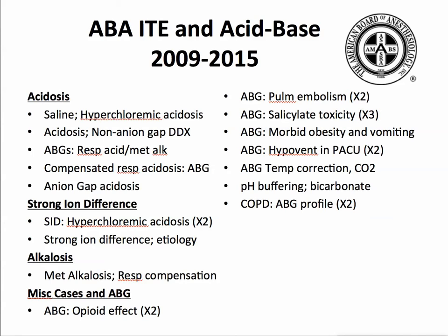There are several questions on strong ion difference — that's the difference between the positive ions and the negative ions that can be measured. And one question on metabolic alkalosis: respiratory compensation would be a drop — if the bicarbonate is going up, then your PCO2 would have to go up also to compensate.